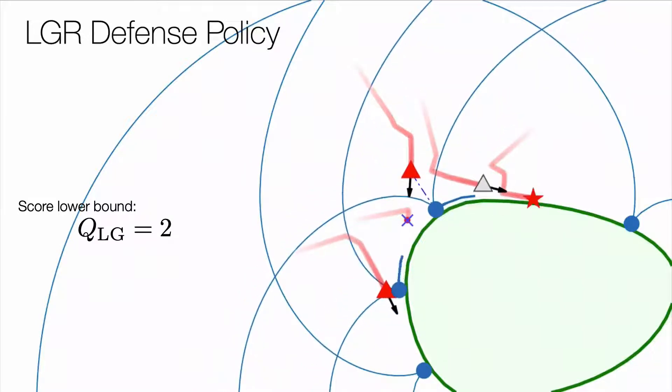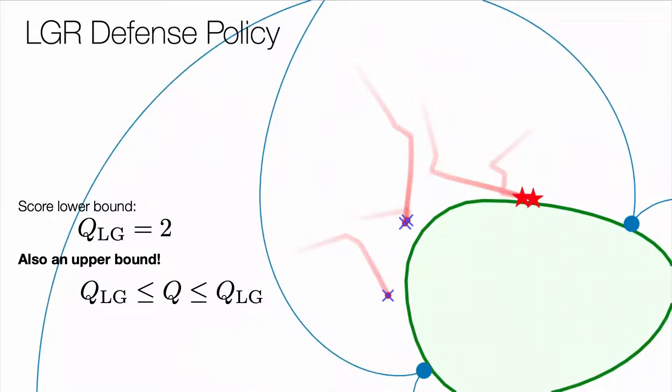This guarantee tells us that QLG is also an upper bound on the score, implying the optimality of the proposed strategies.